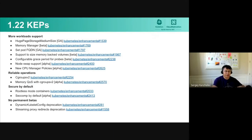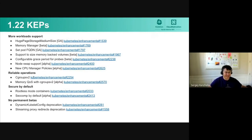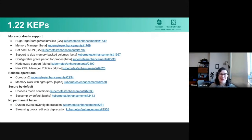It's also hard to categorize KEPs into themes. For instance, node swap support that Alana worked on can be attributed to both supporting more workloads — like some AI workloads that load huge data models — or to reliable operations. For the alpha, I think we're targeting reliable operations more so than workload support, because swap is currently only tunable at the node level rather than for each individual workload.